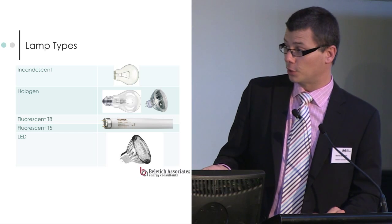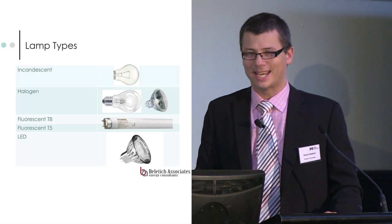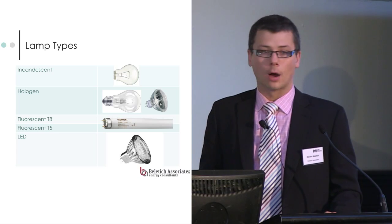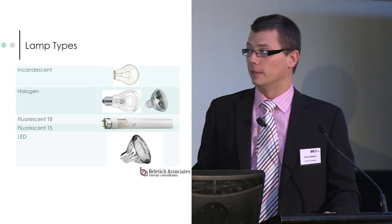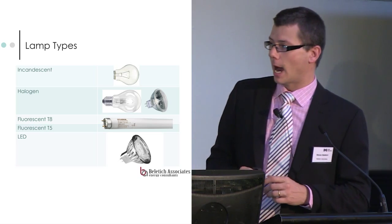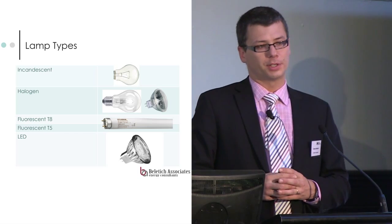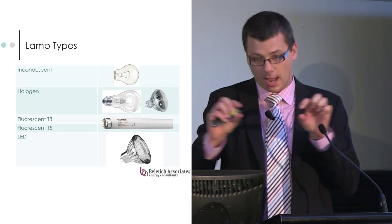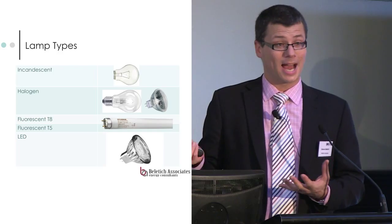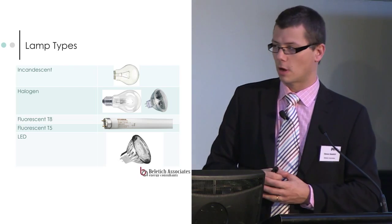Then fluorescent tubes — there are two types we talk about. A T8, which is what we all know as the standard fluorescent tube. There's a T5, which is narrower. It's a 5 eighths of an inch diameter, whereas the T8 is 8 eighths of an inch — one inch diameter.